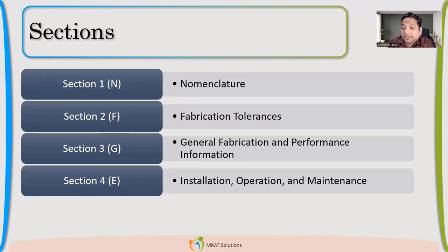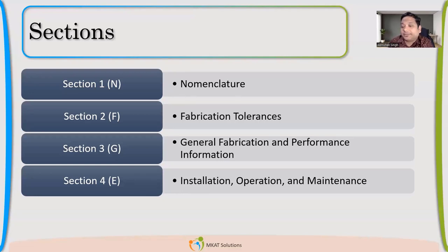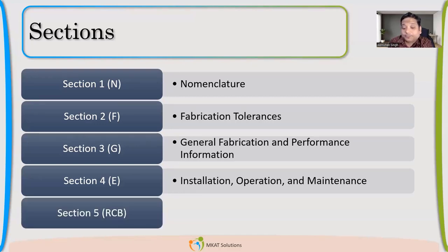Section four talks about installation and operation. You'll also find a chapter on bolt torque tightening sequence. One more very important thing covered in section four is leak testing — specifically what flanges we have to make for leak testing. Other than the flanges which are part of the job, we need to make some additional temporary flanges to do the hydro testing, so we can access and inspect the leakage area.